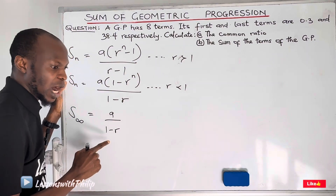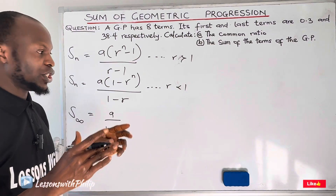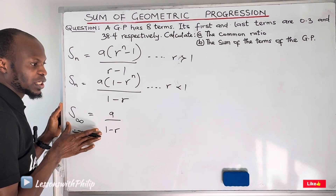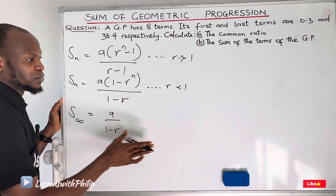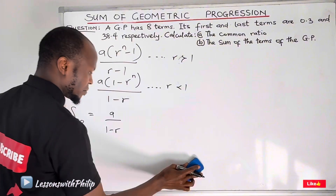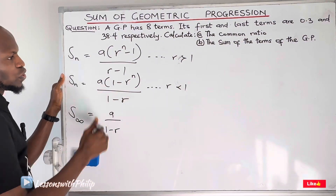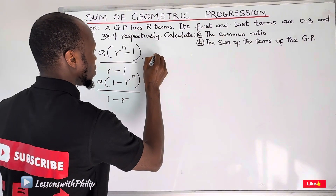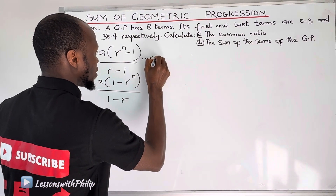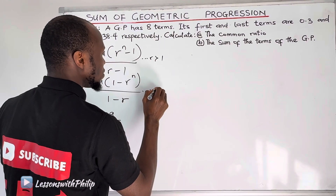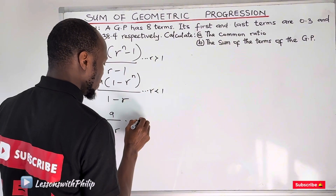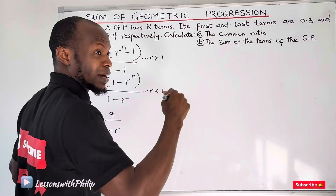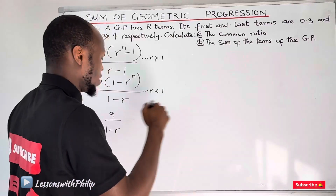It's just for convenience: use the first formula when your common ratio is greater than 1, and the second formula when your common ratio is less than 1. To sum a GP that has infinite terms — where the terms continue without end — the sum of that GP is given as A divided by 1 minus R. This formula is used specifically when the GP has infinite terms.